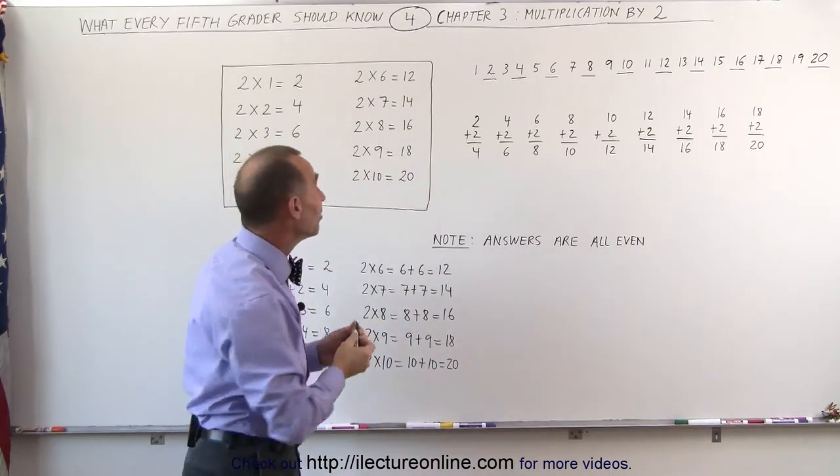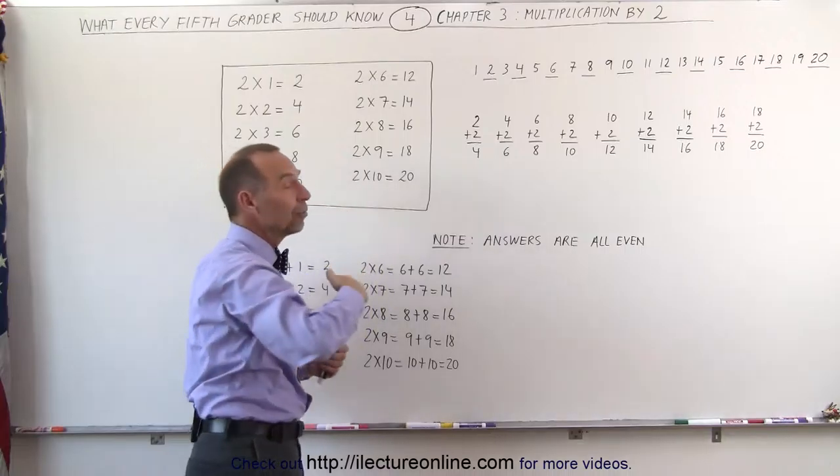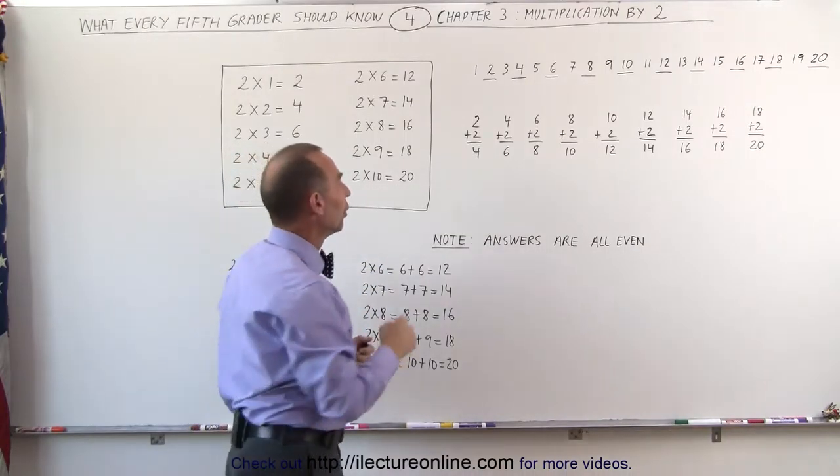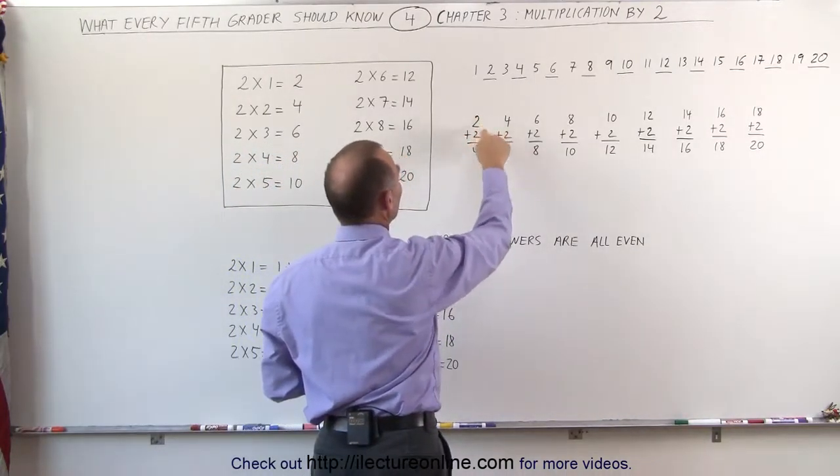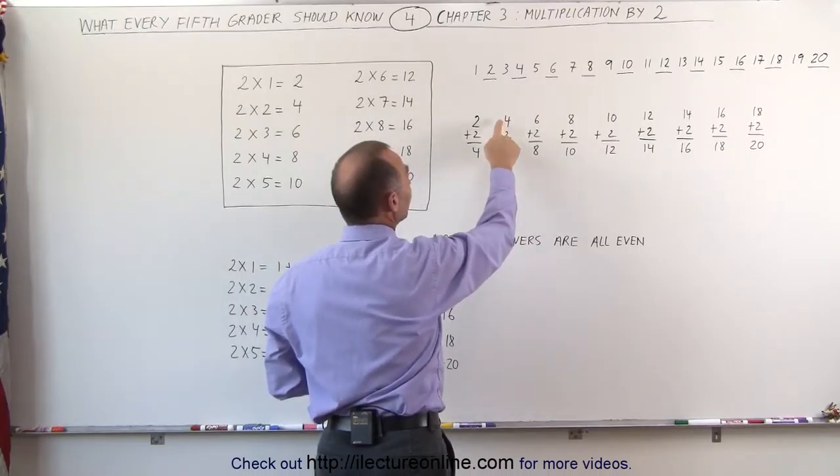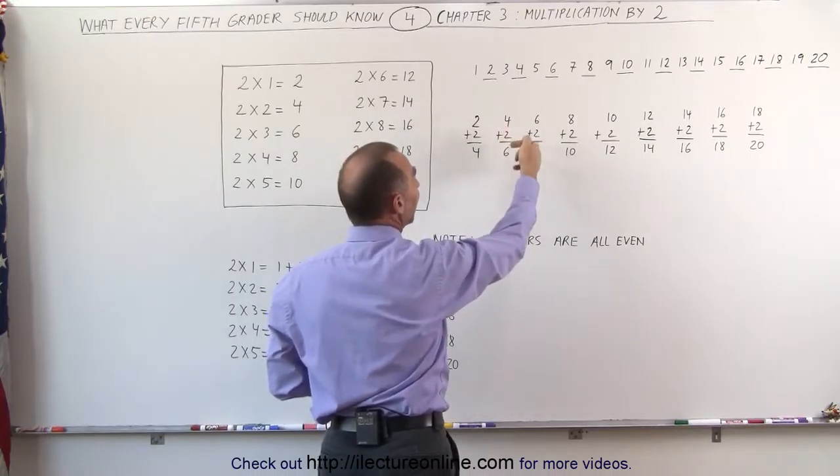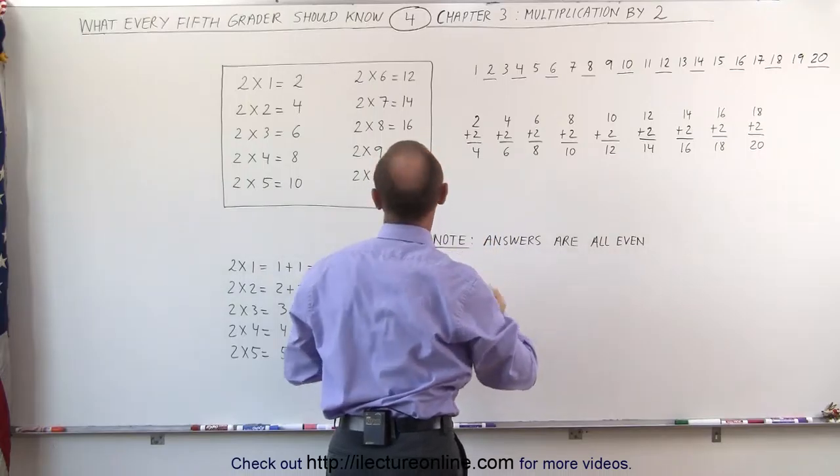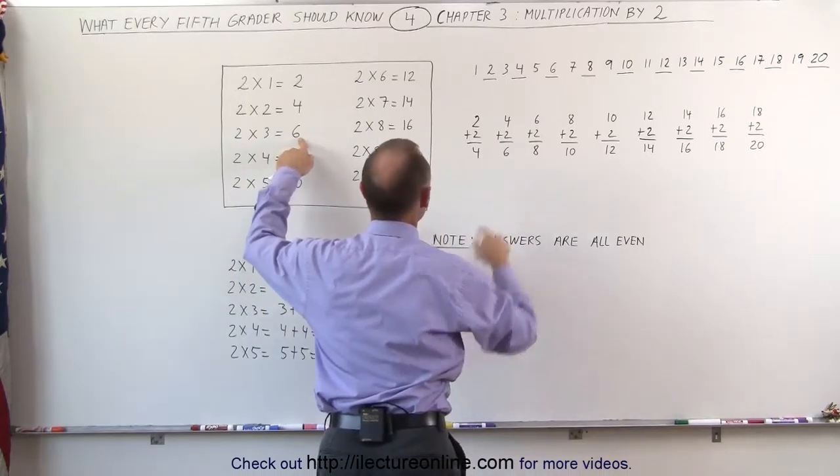Another way of looking at it is that each time we do the multiplication table, we add 2 to the previous answer. 2 times 2 is 4, so we add two 2's together, we get 4. Then the next answer, 2 times 3 is 6, we simply keep adding another 2 to the previous answer.